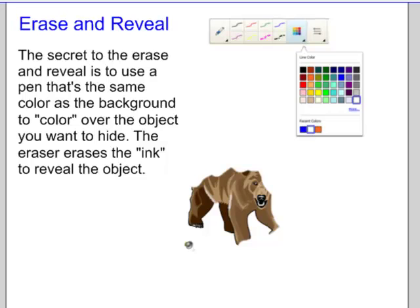The first one I want to show you is called an erase and reveal. The secret is to pick a pen color that is the same color as the background. Use that pen to draw or color over the object you want to hide. In my example here, I have a bear that I've used a white marker to color over.